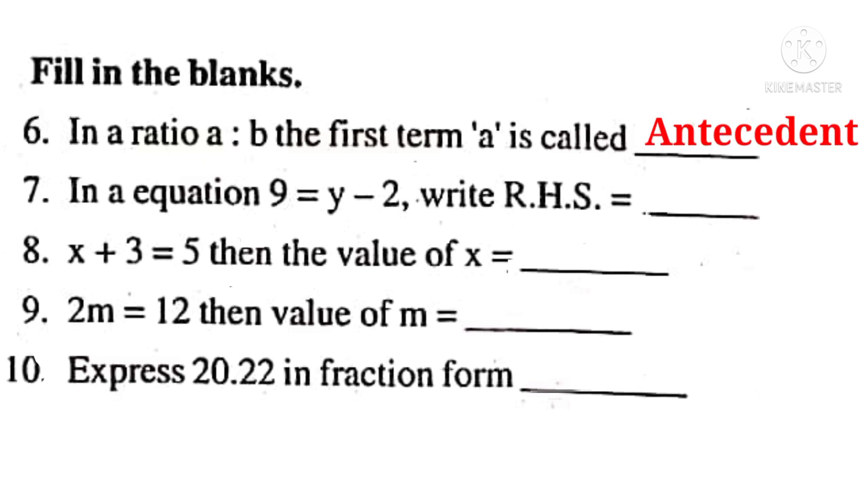No. 7. In an equation, 9 is equal to Y minus 2. Write RHS, that means right hand side of equal to sign. That is Y minus 2.